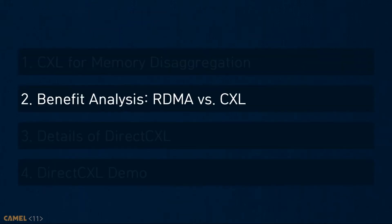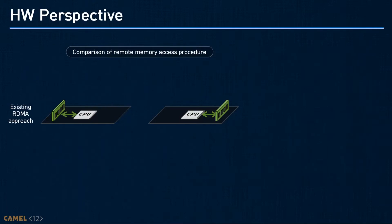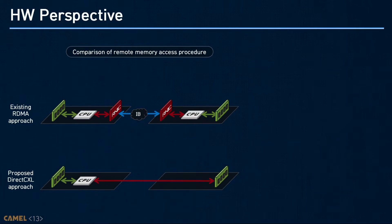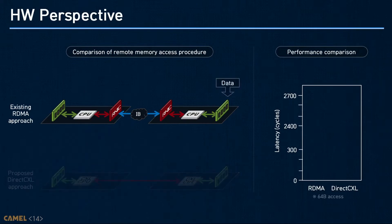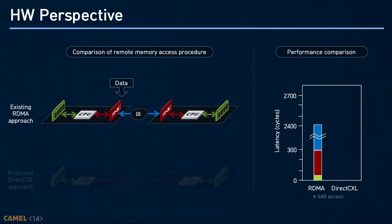I will show the benefits of CXL-based memory disaggregation compared to RDMA from both hardware and software viewpoints. From the hardware viewpoint, RDMA requires a network connection such as InfiniBand, so we need a network interface card with RDMA support called RNIC. In contrast, CXL enables direct access to remote memory, but we need a CXL-enabled CPU and CXL controller for the device. We compared single cache-line load latency of RDMA and direct CXL. For RDMA, data is stored in remote DRAM, so the CPU reads the data to complete the DMA request of the RNIC. The RNIC sends data through the network, and another RNIC at the host site writes received data to local memory using DMA.